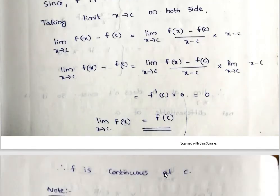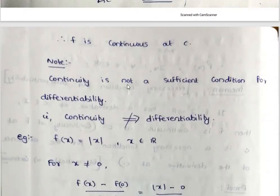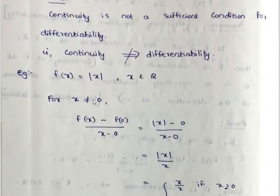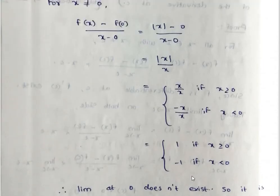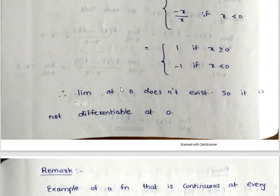However, continuity is not a sufficient condition for differentiability — a continuous function need not be differentiable. For example, f(x) = |x|. Looking at x = 0: f(x) - f(0) divided by x - 0 equals |x| divided by x. For positive x this equals 1, and for negative x this equals -1. Since the left-hand limit and right-hand limit are different, the limit does not exist, so f(x) = |x| is not differentiable at x = 0.